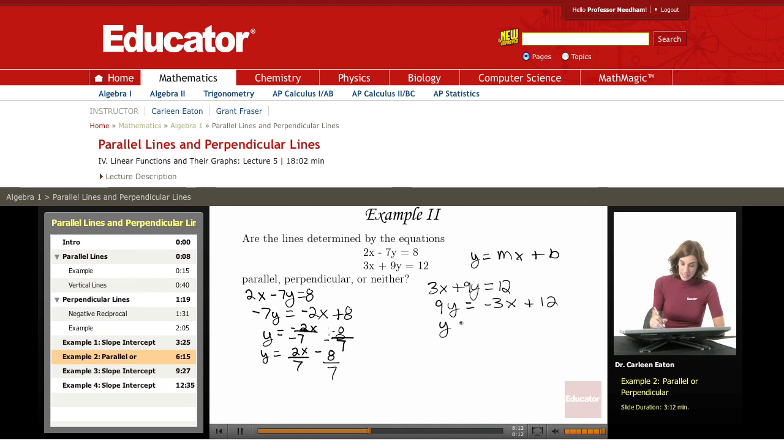Then dividing both sides by 9, y equals minus 3 ninths x plus 12 divided by 9. Simplifies to y equals negative 1 third x plus 4 thirds.